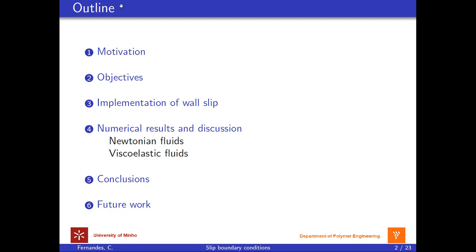The presentation outline is the following. First, I will describe the motivation which leads us to implement the wall slip boundary conditions on the OpenFOAM computational fluid dynamics library. Next, we establish the main objectives. Then, the implementation for the linear and non-linear Navier slip boundary condition will be shown in section 3. Subsequently, in section 4, the numerical results for Newtonian and viscoelastic fluids on the Poiseuille flow will be verified against several analytical solutions. Finally, conclusions and future contributions will be addressed.